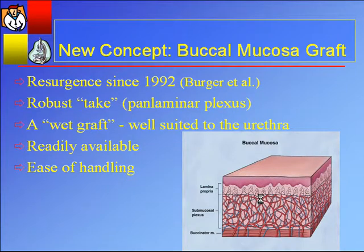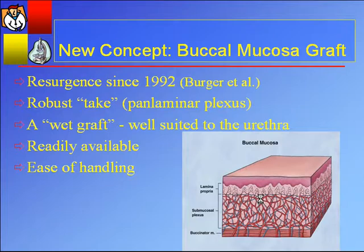The buccal mucosal graft was applied to the urethra by Berger, a German, in 1992. It's an excellent choice for urethral reconstruction. Number one, it has a pan-laminar plexus — skin has an intradermal and subdermal plexus, creating a plane where graft take may not be adequate, but the buccal graft is pan-laminar and random, so anywhere in the lamina propria the graft will take. It's a wet graft suited to a harsh environment — diet Coke, coffee, salivary enzymes, brushing your teeth — and the urethra is similarly a high-osmolality, acidic, very caustic environment. So the buccal graft seems ideally suited to the urethra and is readily available and easy to handle.